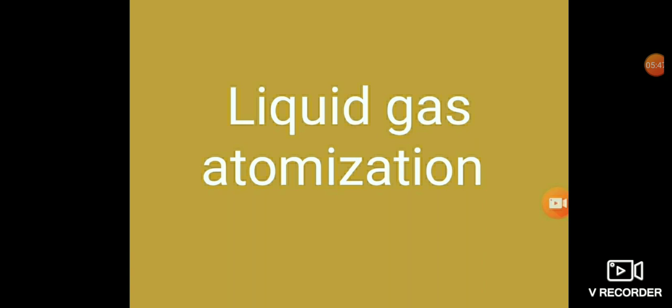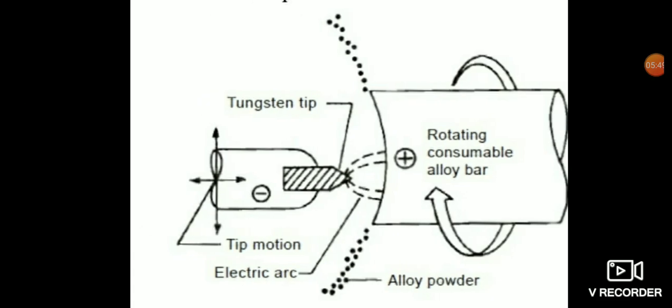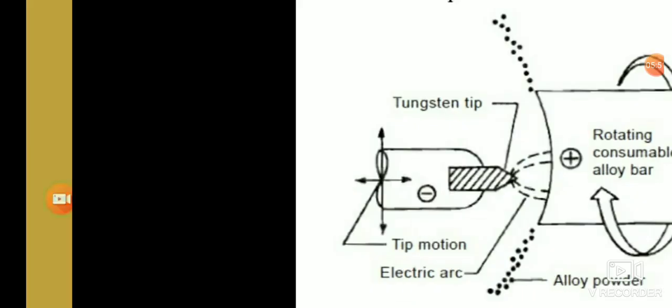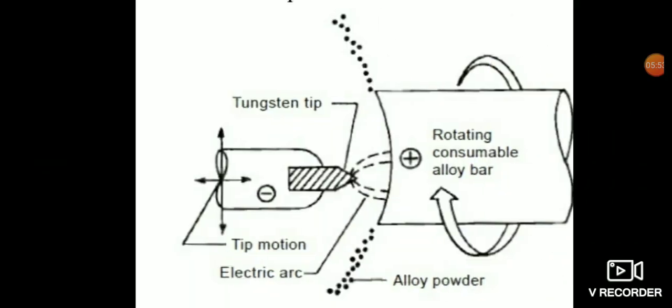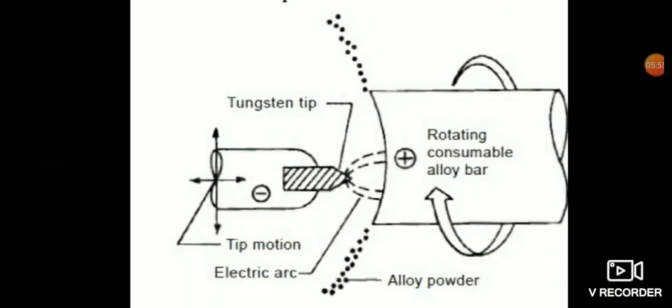Centrifugal atomization: The basis of centrifugal atomization is the ejection of molten metal from a rapidly spinning container, plate, or disk.